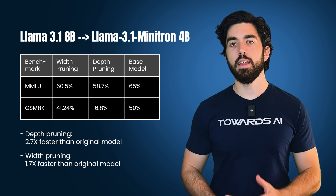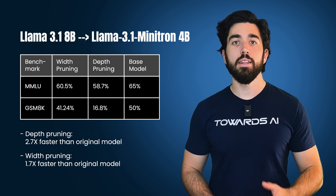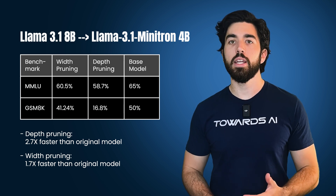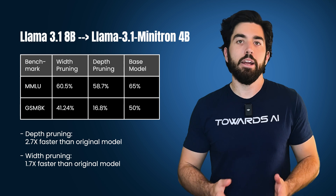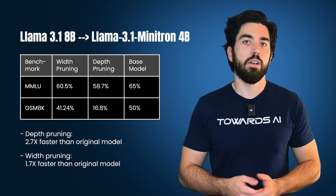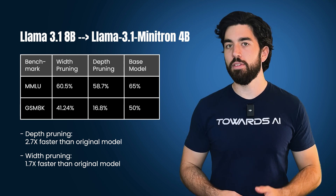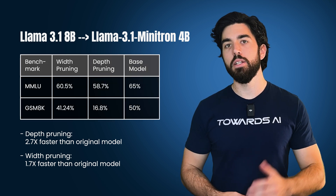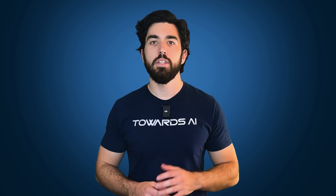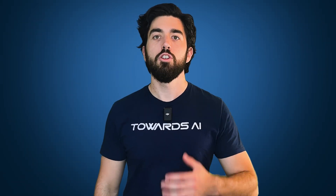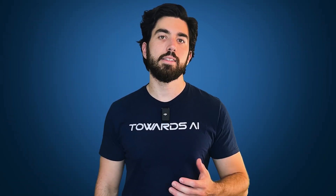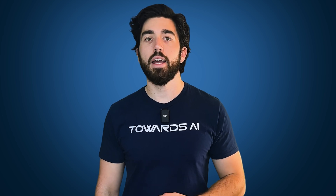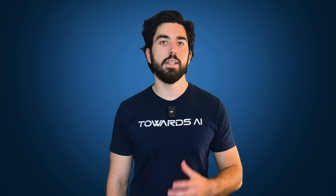However, depth pruning wasn't all bad — it actually sped things up. Depth pruning gave a 2.7x speed-up over the original model, while width pruning gave a 1.7x speed-up. One interesting finding was that when doing depth pruning, removing contiguous layers — layers next to each other — was way more effective than removing random layers based on importance. To wrap it up, they proved that you can take massive models, shrink them down, and still get state-of-the-art performance — sometimes even better than the original — using smart strategies like pruning and knowledge distillation.